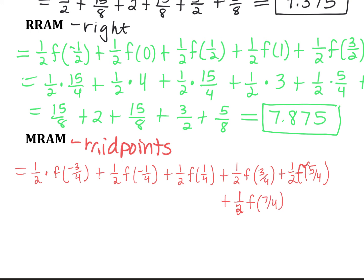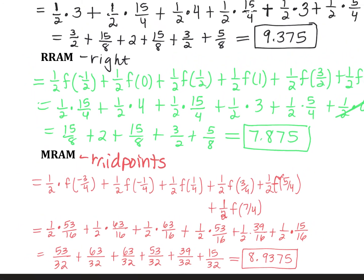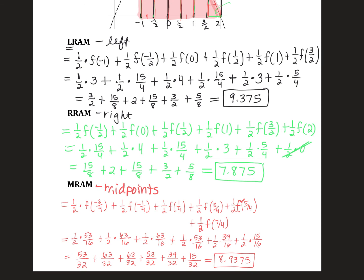I found all the y values at these six midpoint x values and got these values. Multiplying by 1 half gives six values. With a common denominator of 32, adding the numerators gives 8.9375. Remember the exact area is between LRAM and RRAM. This MRAM of 8.9375 is between them, and MRAM is often a better approximation. We'll find the exact area in coming months, but it's probably close to 9.